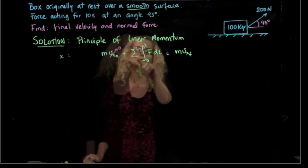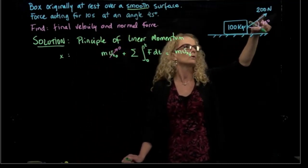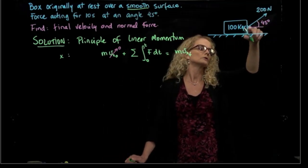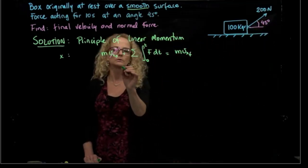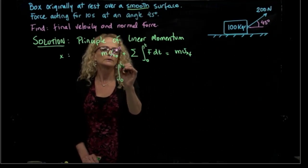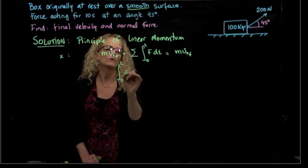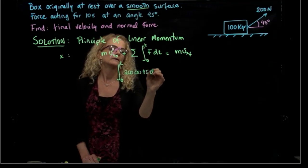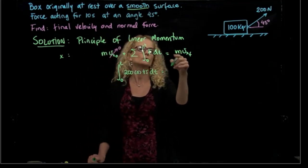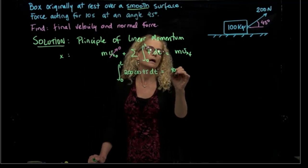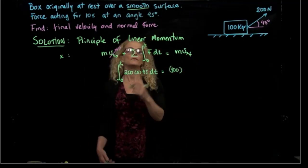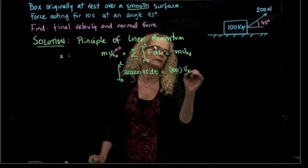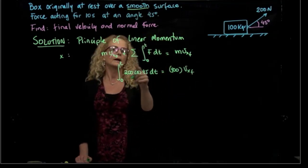We only have one force, and in x direction is the component of 200 newtons times cosine of 45. So we have the integral, zero to t, my force, which is 200 cosine of 45 dt. And that will be equal to the mass, which is 100, times the final velocity, which is what I want to find.